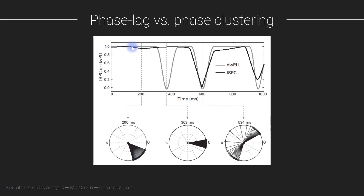The ISPC, shown as the black line, stays the same. The de-biased weighted PLI — essentially a smoothed version of the PLI — drops all the way down to 0. That happens as this distribution passes a phase angle of 0. As the distribution slides upward, the PLI dips to 0 when half of the distribution is below 0 and half is above 0.